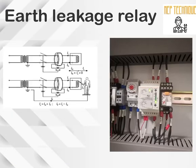We will now understand how it works. The figure illustrates the operation of the core balance leakage device. When the system is under normal conditions, the phase current and neutral current will be equal and in phase, so the CT — that means current transformer — will not detect any current. Under normal circumstances, line current plus neutral current is equal to zero. Just remember Kirchhoff's law: the sum of all currents meeting at a point is equal to zero.